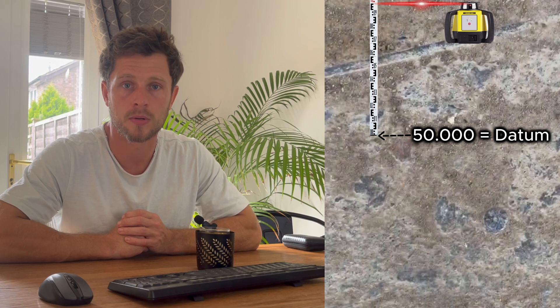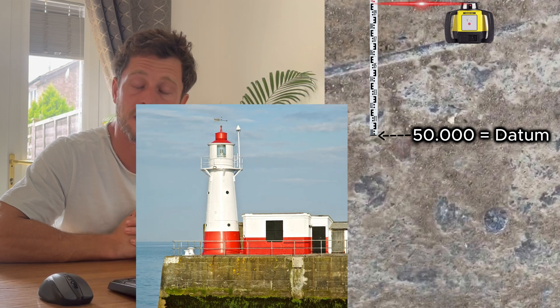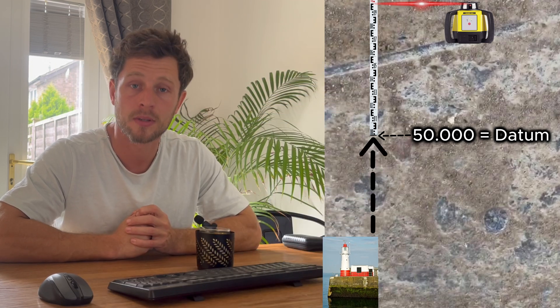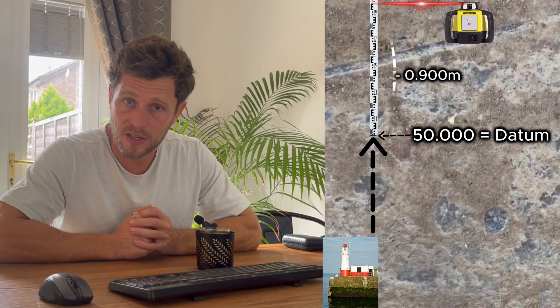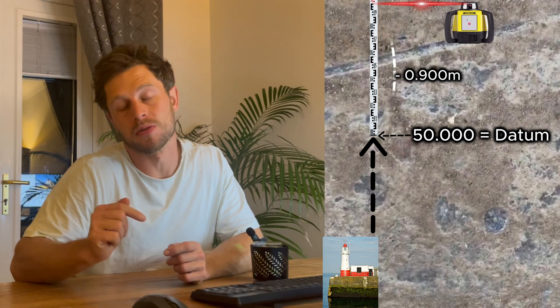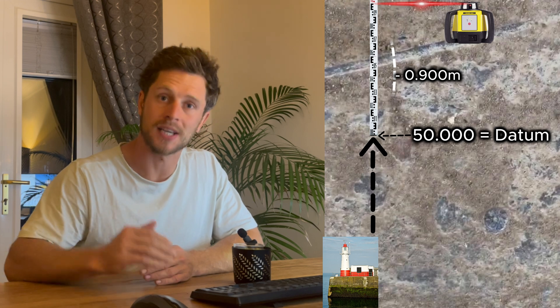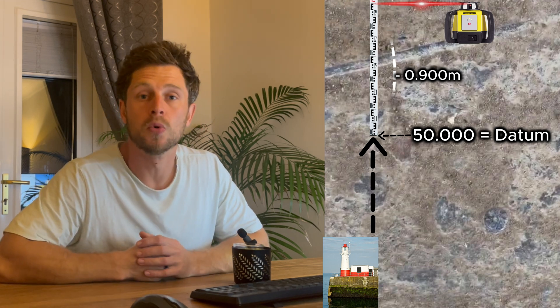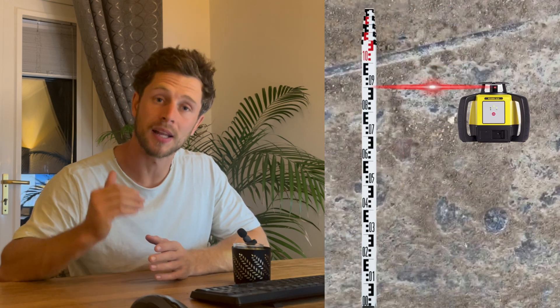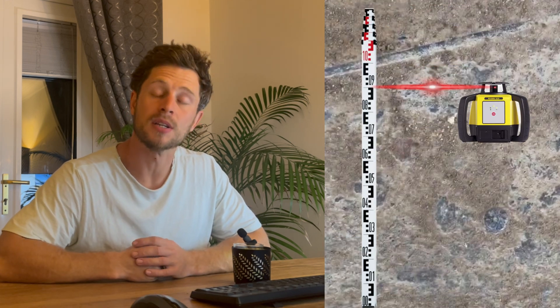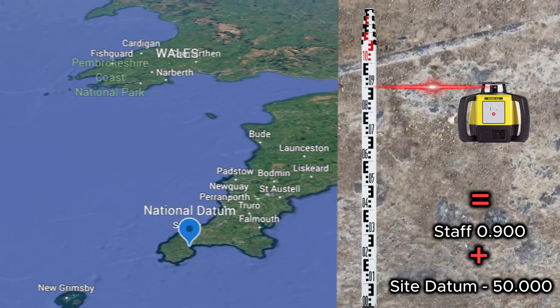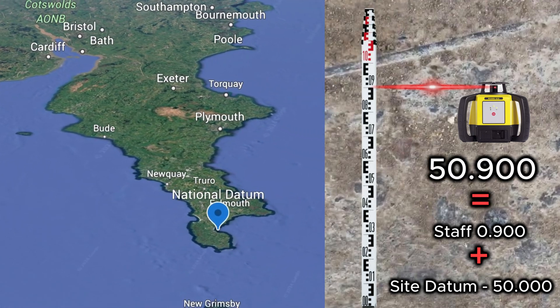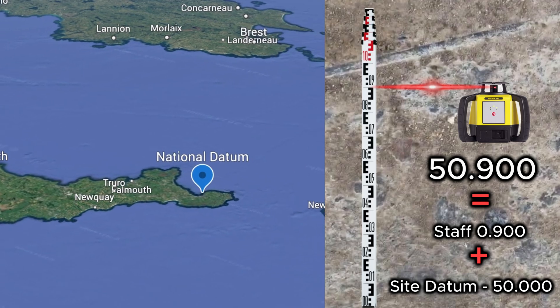So let's say the datum height is 50.000. What this means is this point is 50 metres above the national reference datum down south. Whatever the measurement on the staff is, that's added to the datum height. So from the transfer datum to the laser head is 0.9 metres — therefore the laser head is 50.900 above the national reference point down in Cornwall, the Ordnance Datum Newlyn.